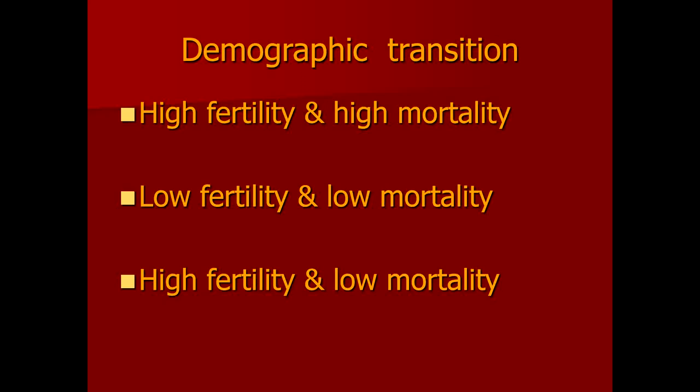Demographic transition can be explained through different patterns. In the early pre-industrial era, there was high fertility and high mortality — females on average produced more than eight to nine children. There was no availability of family planning methods, no education, and no methods known to females for birth spacing, so there was high fertility in that era.